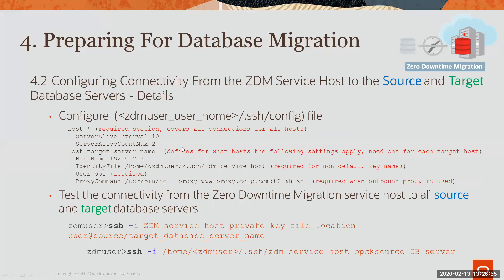After setting up the keys, you will need to configure the SSH config file. Create a new file with 'Host *', which means the following section applies to all connections. Then add a host block with the name of your target database server, and another for your source database server. Each block contains the IP address, the identity file used by the ZDM user to connect — that is, the private key — and the user to connect with on the target, which in our case is OPC.